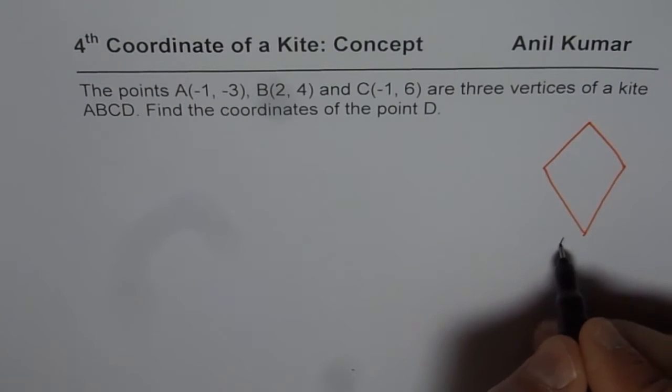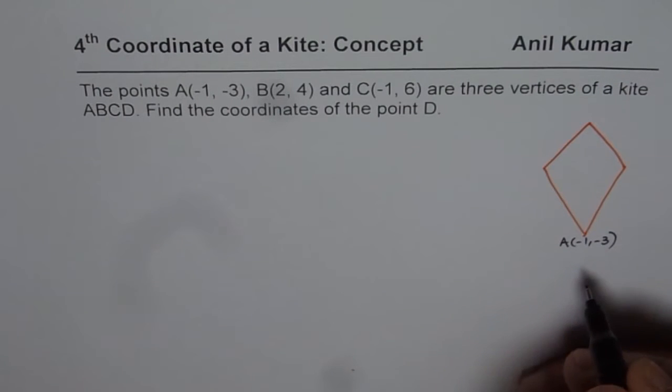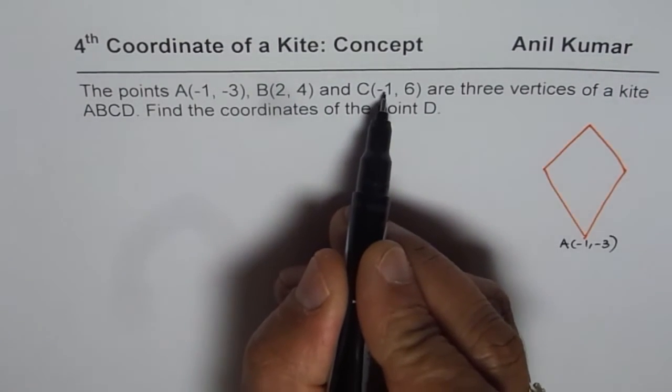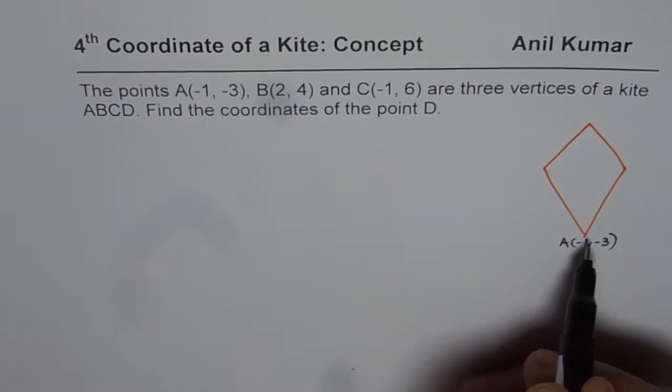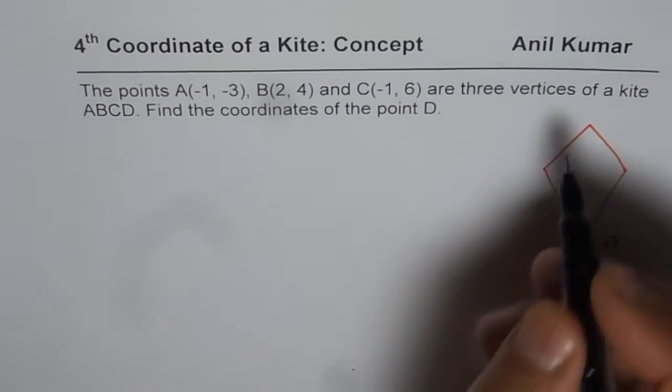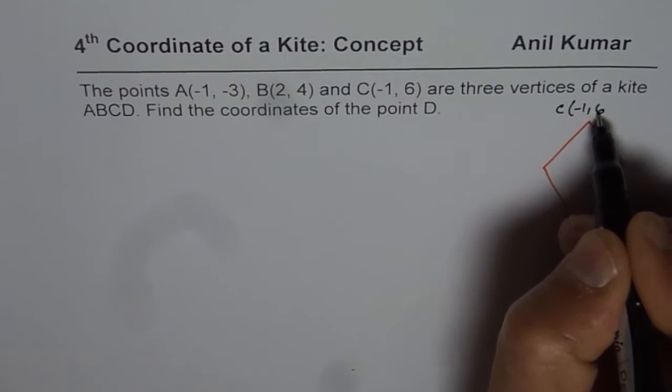A is (-1, -3). Assume this is a graph paper and we are plotting these points. You will notice C is (-1, 6). The x-coordinates are same, y are different. C is at higher position, so we will write C here as (-1, 6).